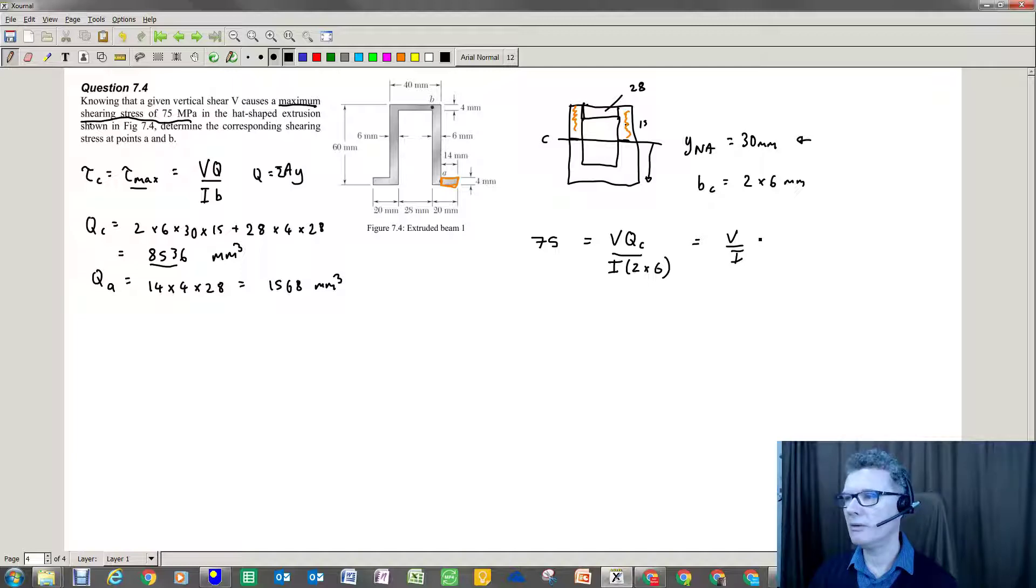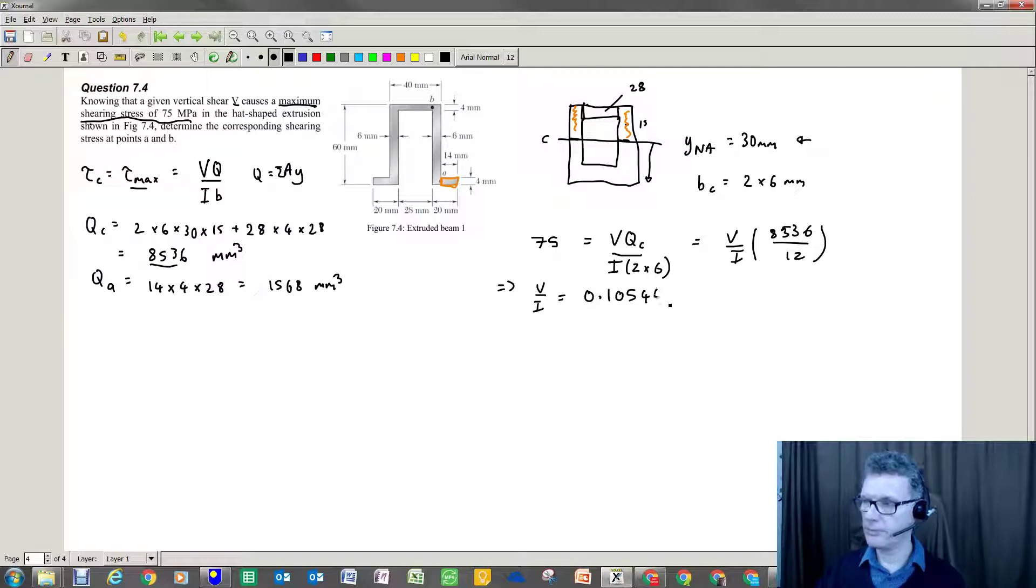So I can sort of work out the base. So this V/I term, which is something that I know nothing about. Well, I know nothing about V. I could work out, but I don't need to. So that's going to be 8536 divided by 12. So therefore, I can say V divided by I is going to be given as 75 times 12 divided by 8536. So that equals this number. I've been very naughty with my units. So hopefully it's going to come out in the wash.